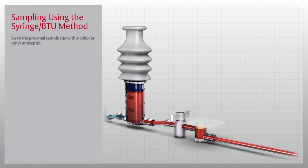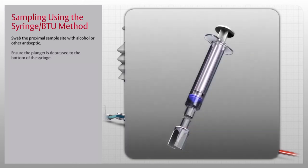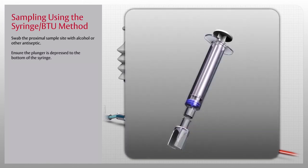To begin, swab the proximal sample site with alcohol or other antiseptic. Then, ensure the plunger is depressed to the bottom of the syringe.